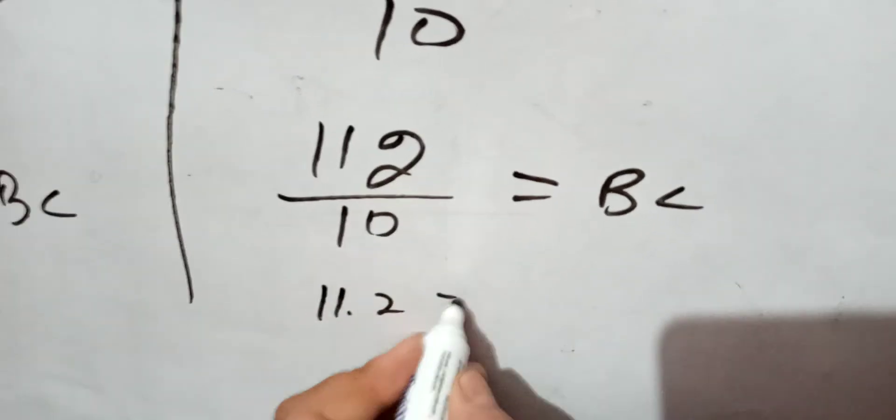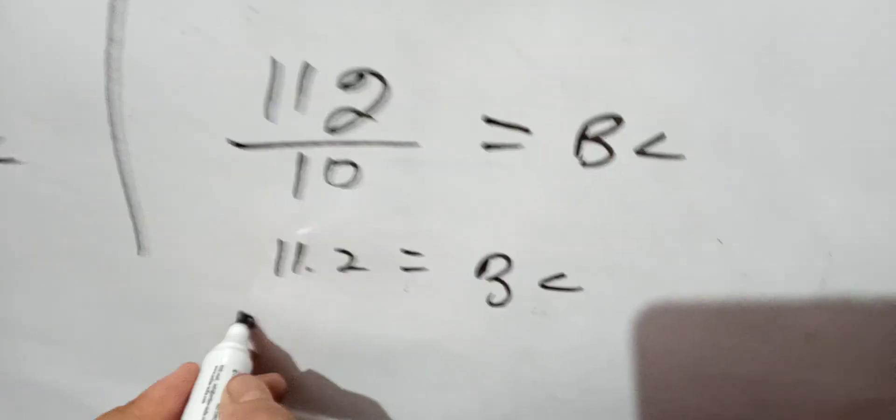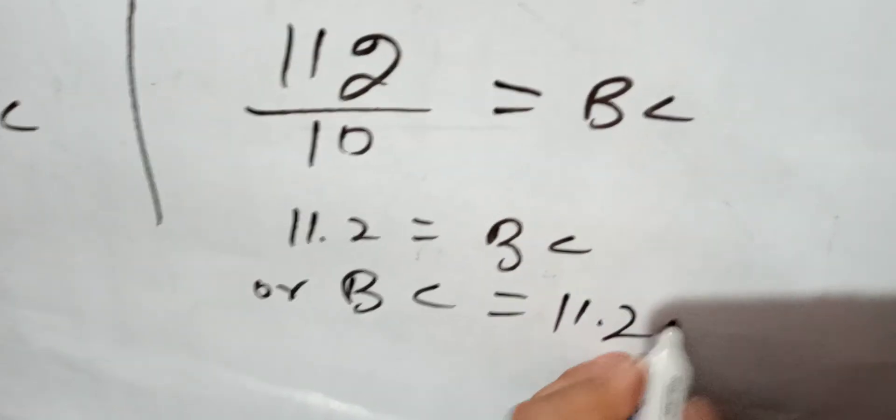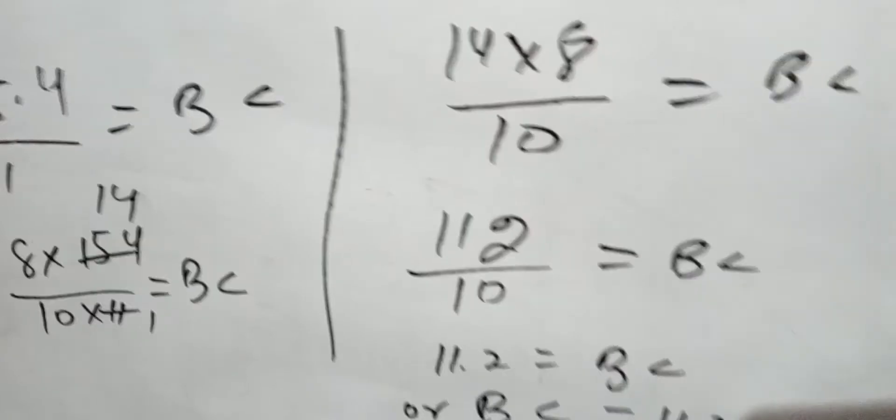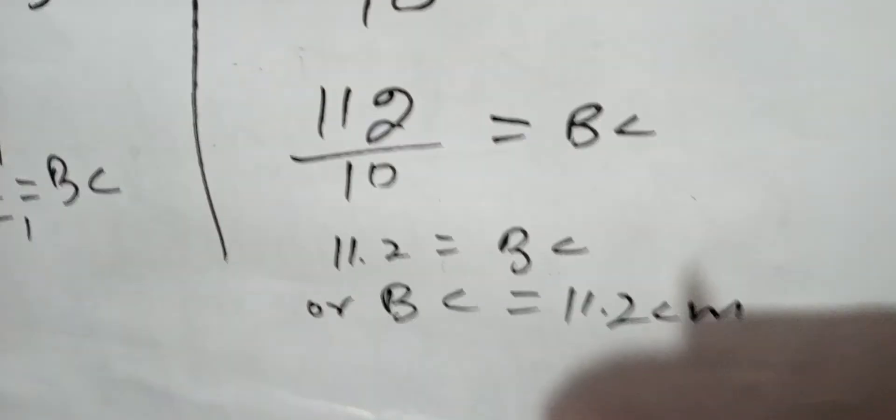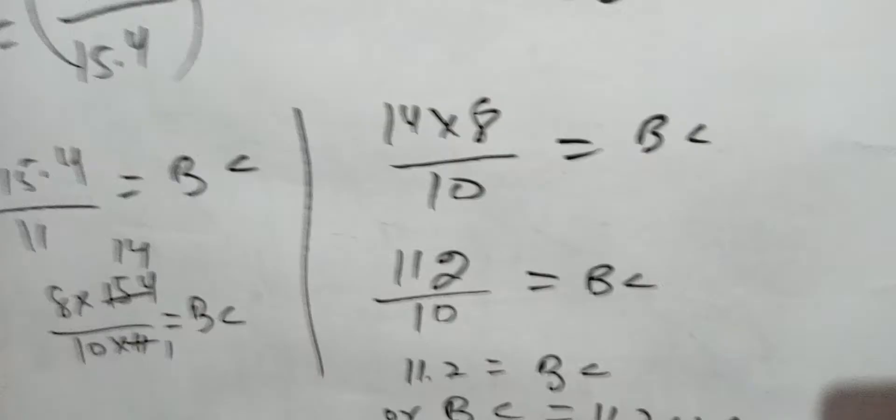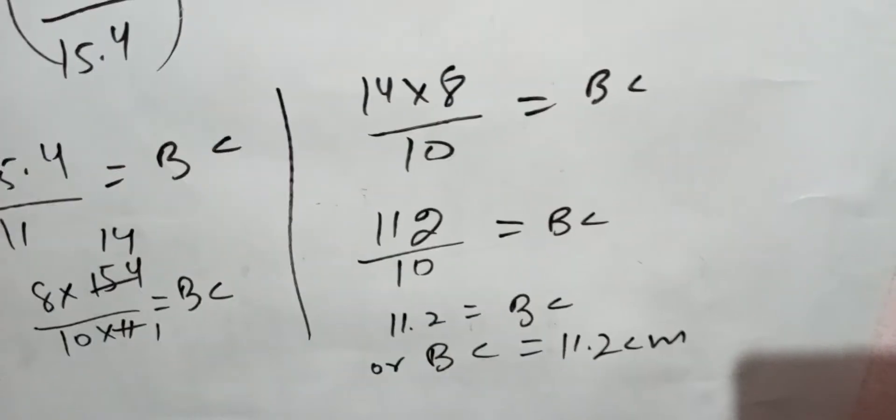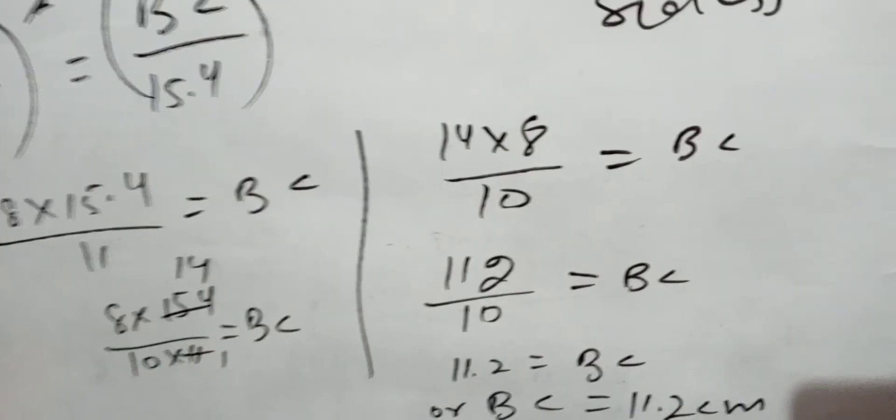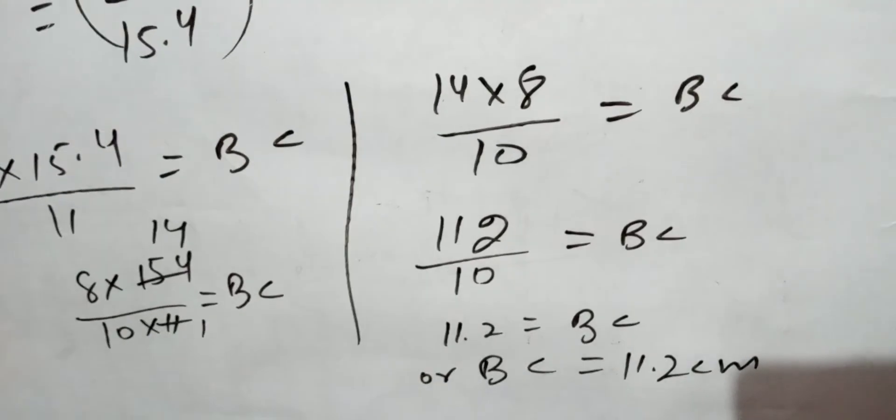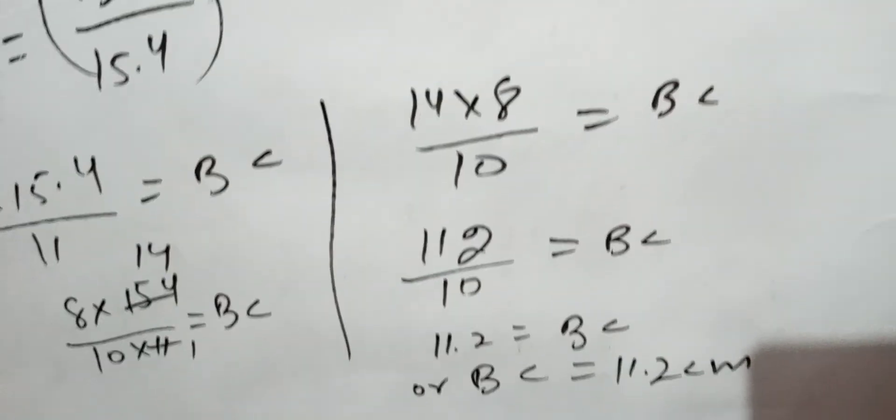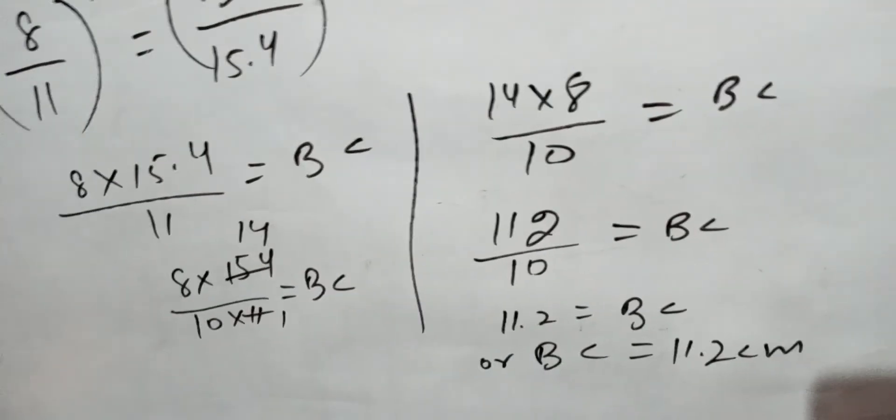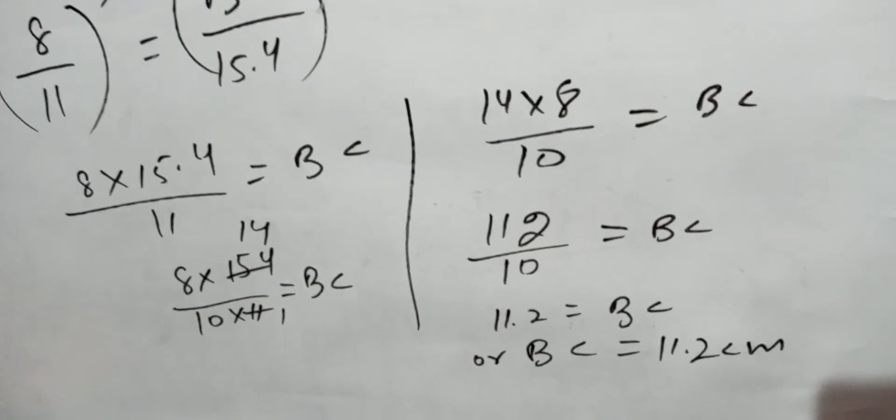And that is 11.2 centimeters. The length of BC equals 11.2 cm. This is the first question, very easy question based upon the main theorems. The value of BC equals 11.2 cm. Thank you.